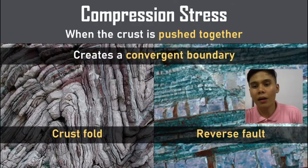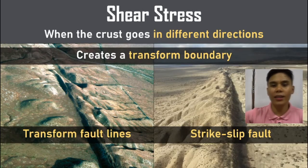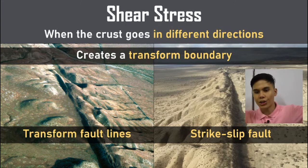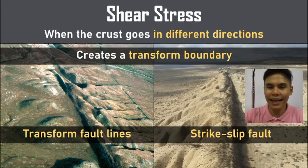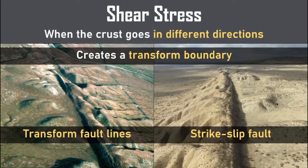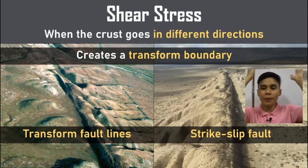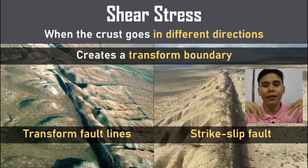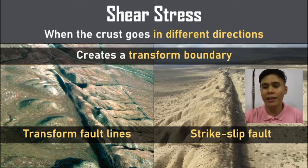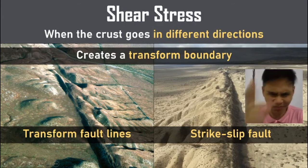Shear stress is when the crust goes in different directions. We have transform fault lines and strike-slip faults — they're the same thing. Shear stress causes transform boundaries or strike-slip faults. When we talk about the boundaries between land, they're called transform. If we're talking about the fault lines, strike-slip. Generally they're interchangeable. Scientists also get under their skin about that.